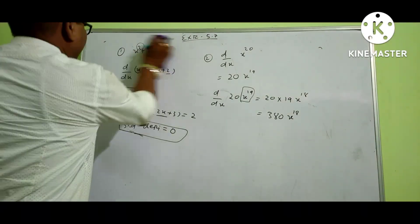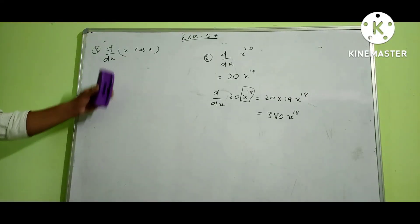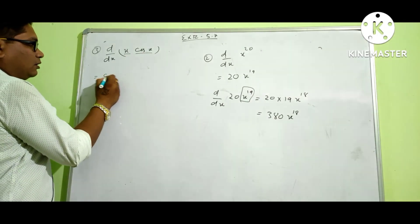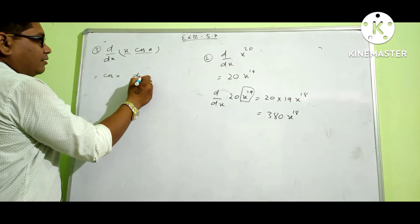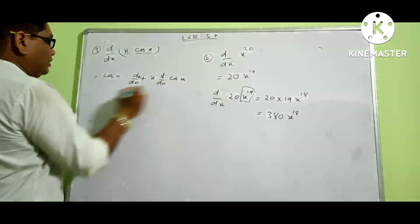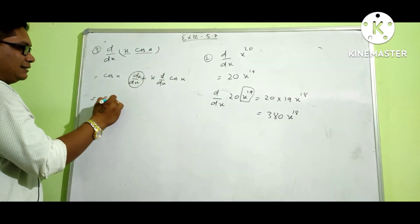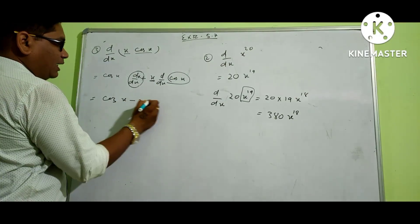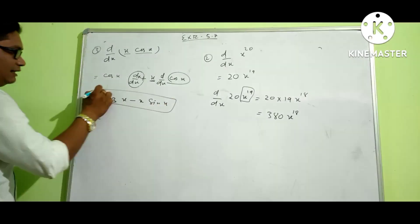Number 3: x times cos x. We write x cos x as x into cos x and apply the product rule. That gives: cos x as it is, into the derivative of x, plus x as it is, into the derivative of cos x, which is minus sin x. So the first derivative of x cos x equals cos x minus x sin x.